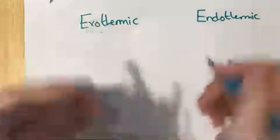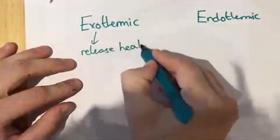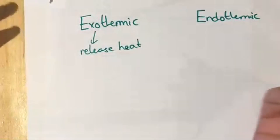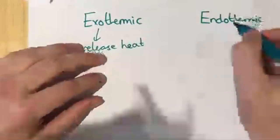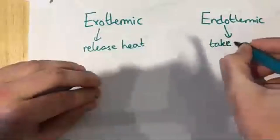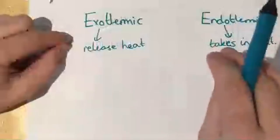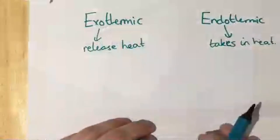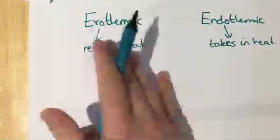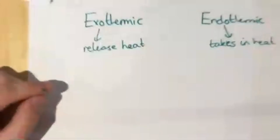Exothermic means heat is released — in the reaction, heat is released. In an endothermic reaction, heat is taken in. If we want to be more precise, instead of heat we should be talking about energy, because photosynthesis, for instance — which you've just done in your biology paper one — is an endothermic reaction. It takes in energy, but not in the form of heat, but in the form of light.